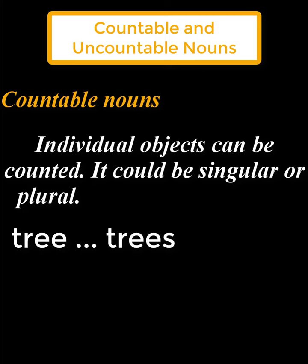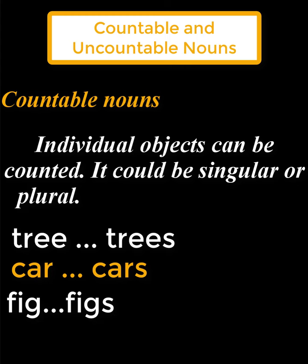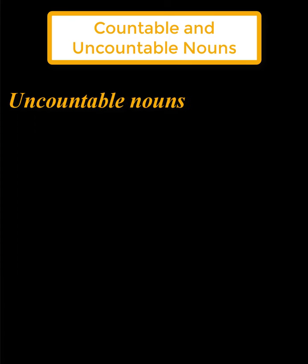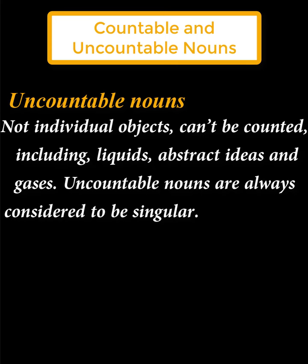Examples of countable nouns: tree / trees، car / cars، fig / figs، olive / olives. تأتي مفرد وتأتي جمع. There are some bananas, there are some eggs, there are some grapes, there are some olives, there are some nuts, there are some oranges.